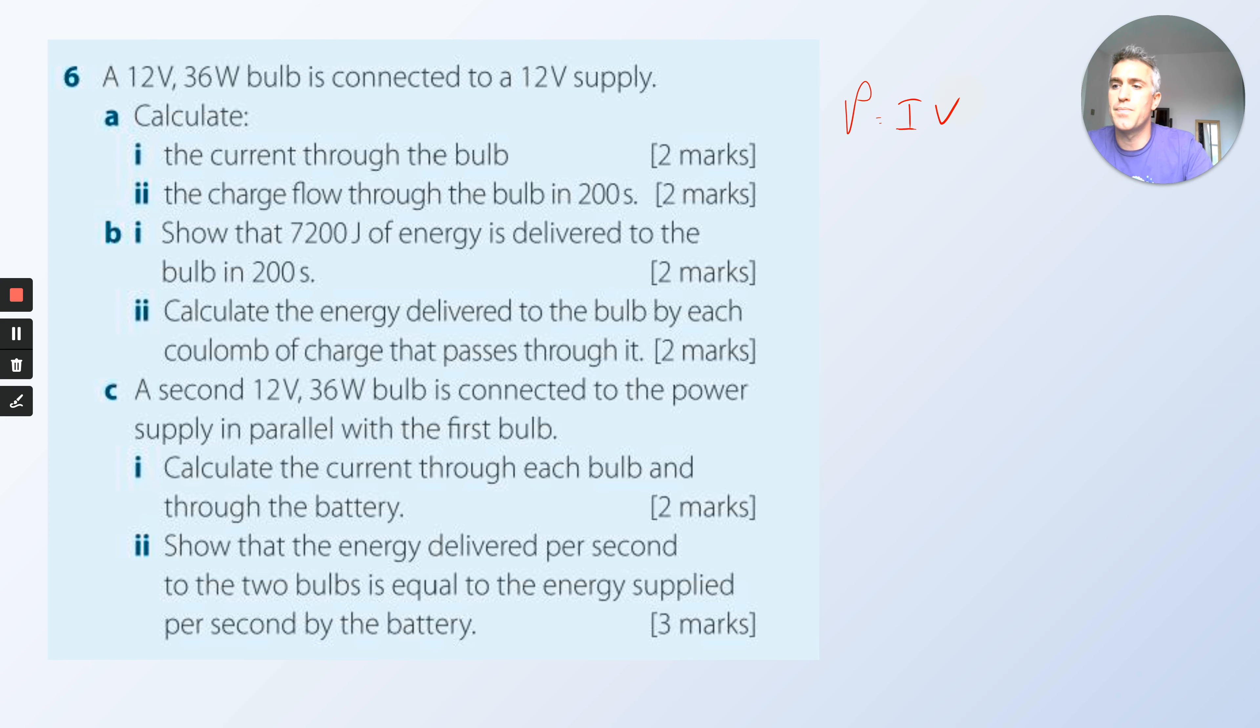A 12 volt, 36 watt bulb is connected to a 12 volt supply. Calculate the current. Easy, P equals I times V. The charge flowing through the bulb in 200 seconds. Remember, charge Q equals I times t. Show that 7200 joules of energy is delivered to the bulb in 200 seconds. Power is energy over time.